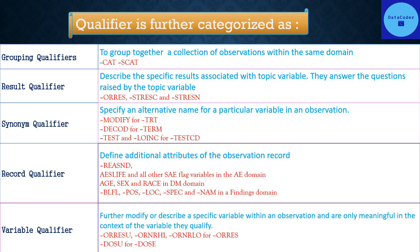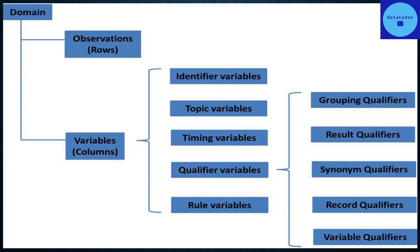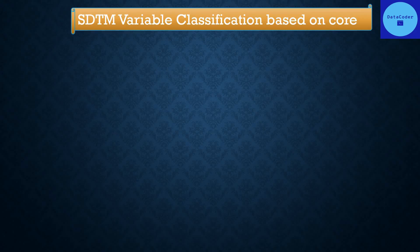To summarize the role-based classification: each SDTM domain variable is classified into five major classes — identifier, topic, timing, qualifier, and rule. Qualifier variables are further subcategorized into grouping qualifier, result qualifier, synonym qualifier, record qualifier, and variable qualifier. Next, we look at SDTM variable classification based on core.